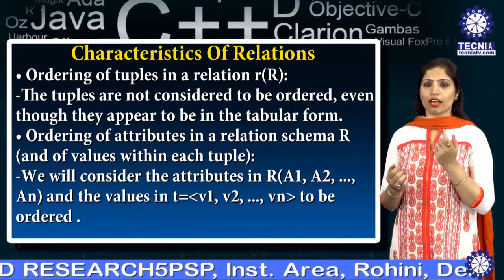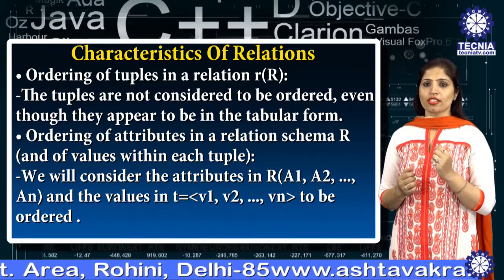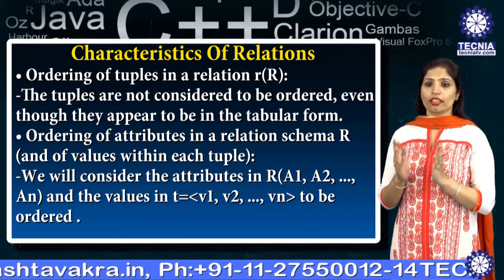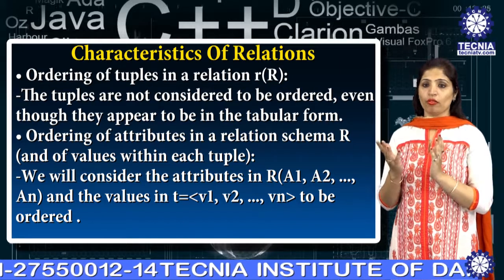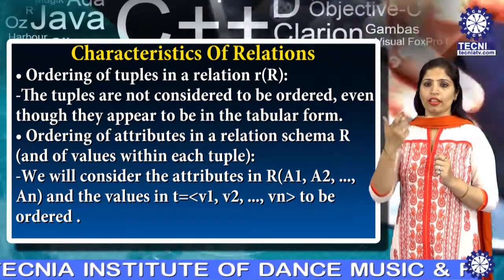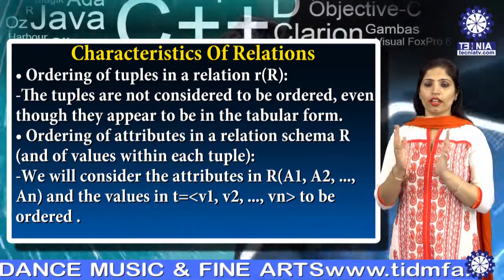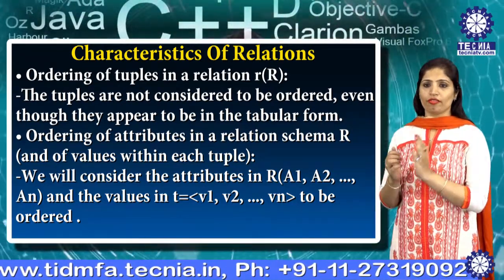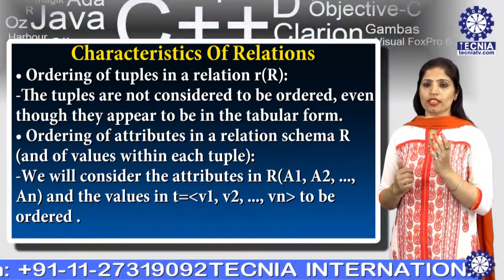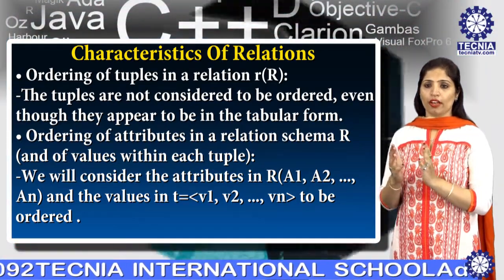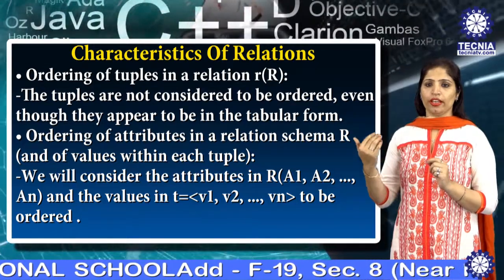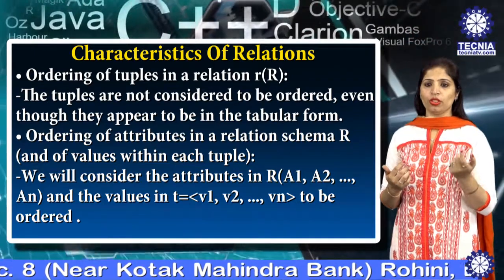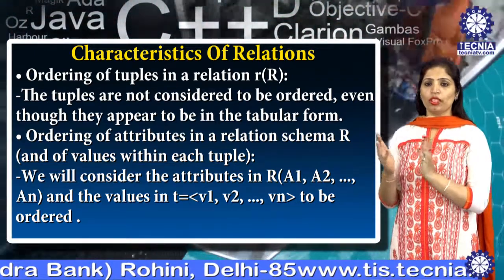Next, let's discuss the characteristics of a relation. The first characteristic is ordering of tuples in a relation R. The tuples are not considered to be ordered, even though they appear to be in tabular form. The second characteristic is ordering of attributes in a relation schema R and of values within each tuple. We consider the attributes in relation R as A1, A2, A3, ..., AN and the values in the tuple as V1, V2, V3, ..., VN, which are to be ordered.